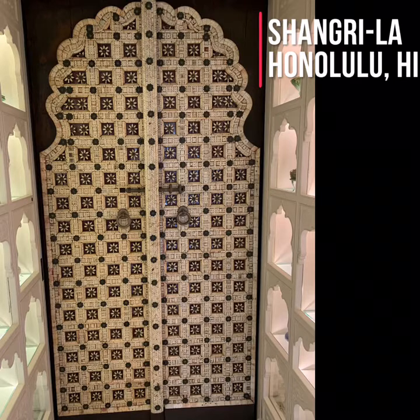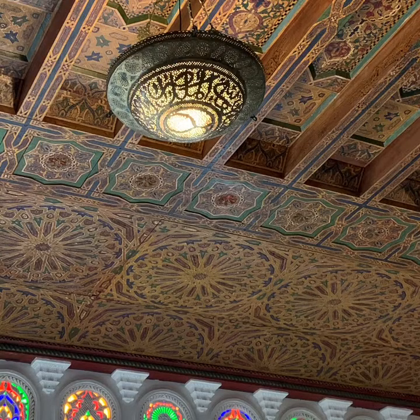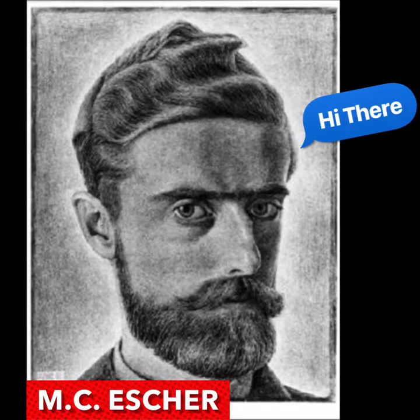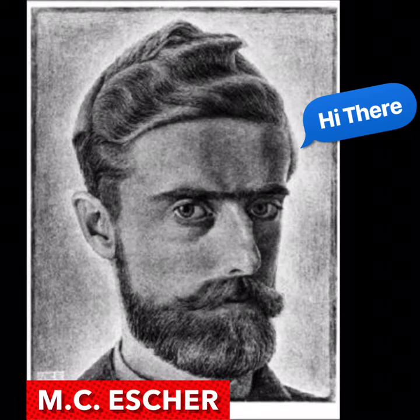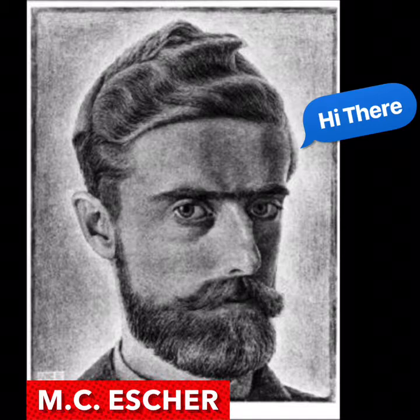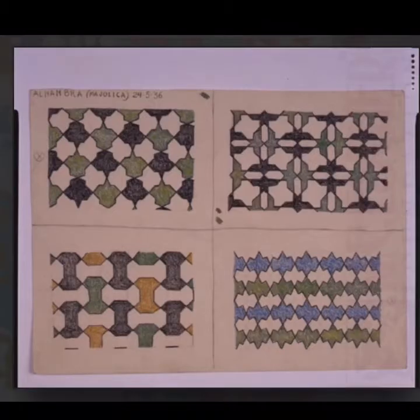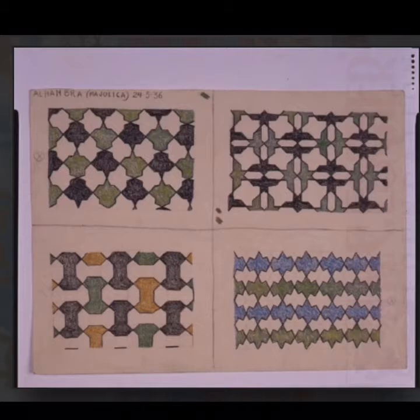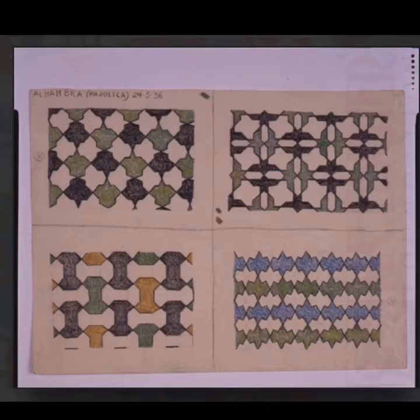Enter this guy, M.C. Escher, a Dutch artist who was really inspired by the Alhambra. He actually went there and drew pictures of the designs he saw. This is an actual photograph of the work he made in 1936. After observing the different tiling of the Alhambra in Spain, using the mathematics of shapes and angles, he was able to create these really interesting designs that tessellate, or cover the surface with no gaps or overlaps.